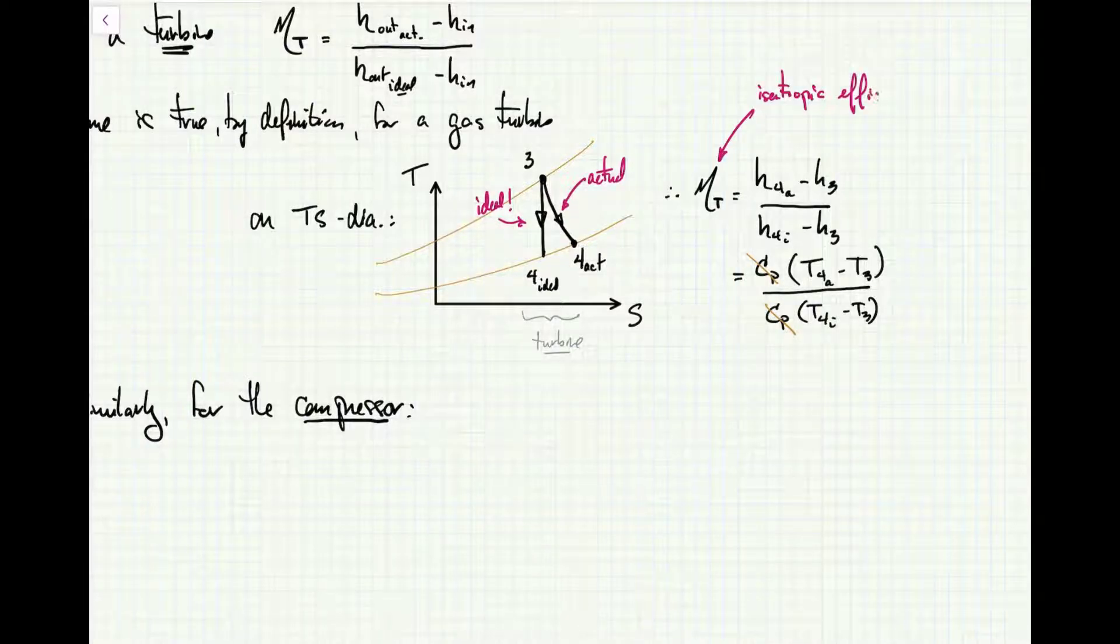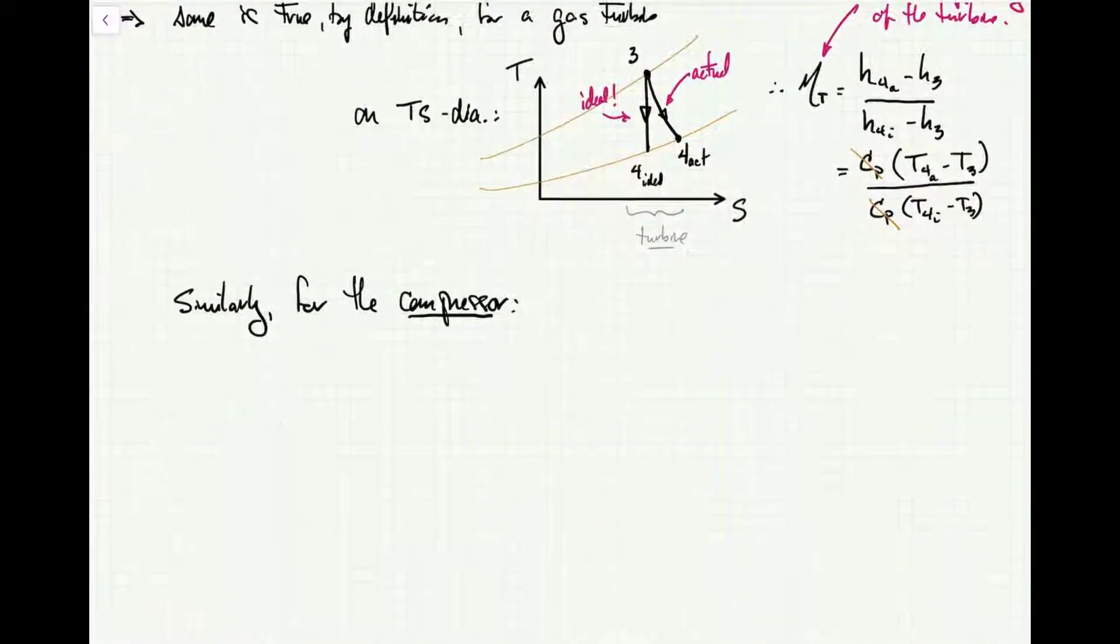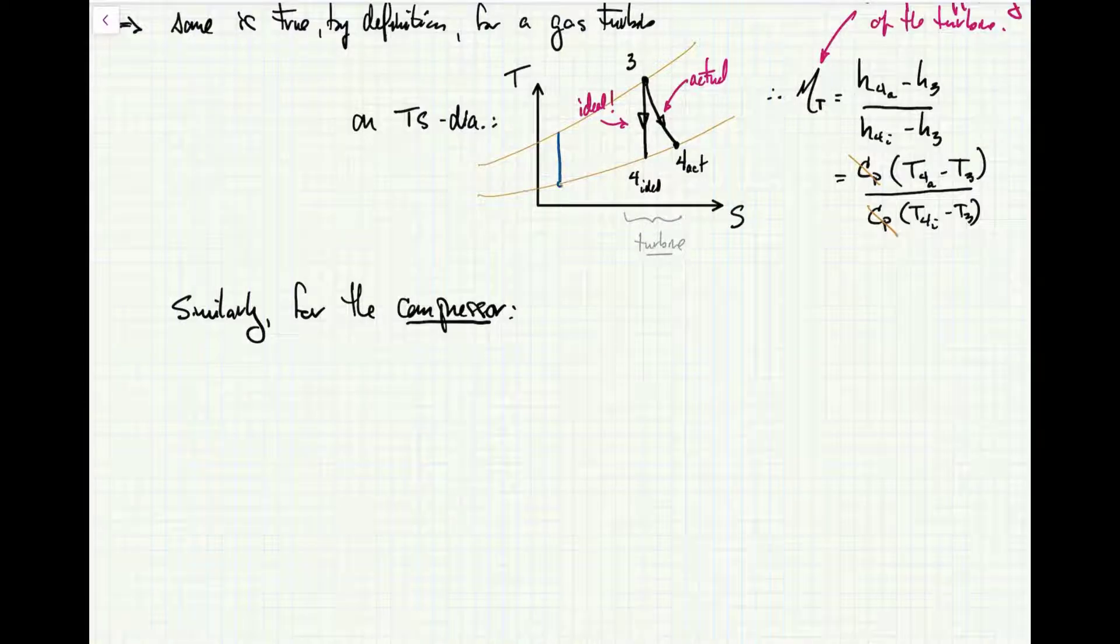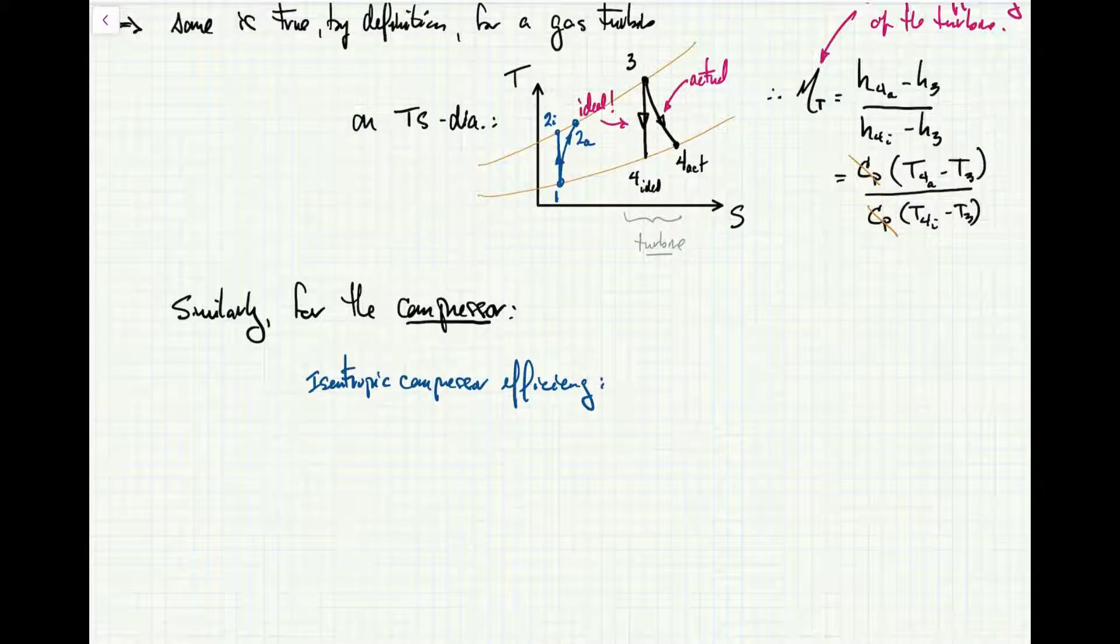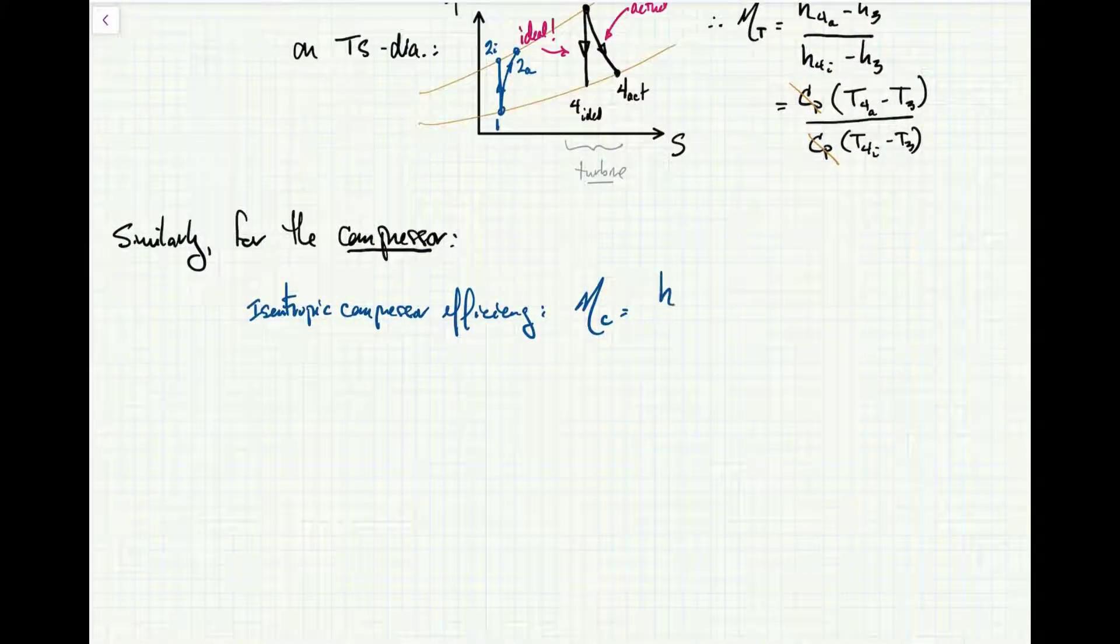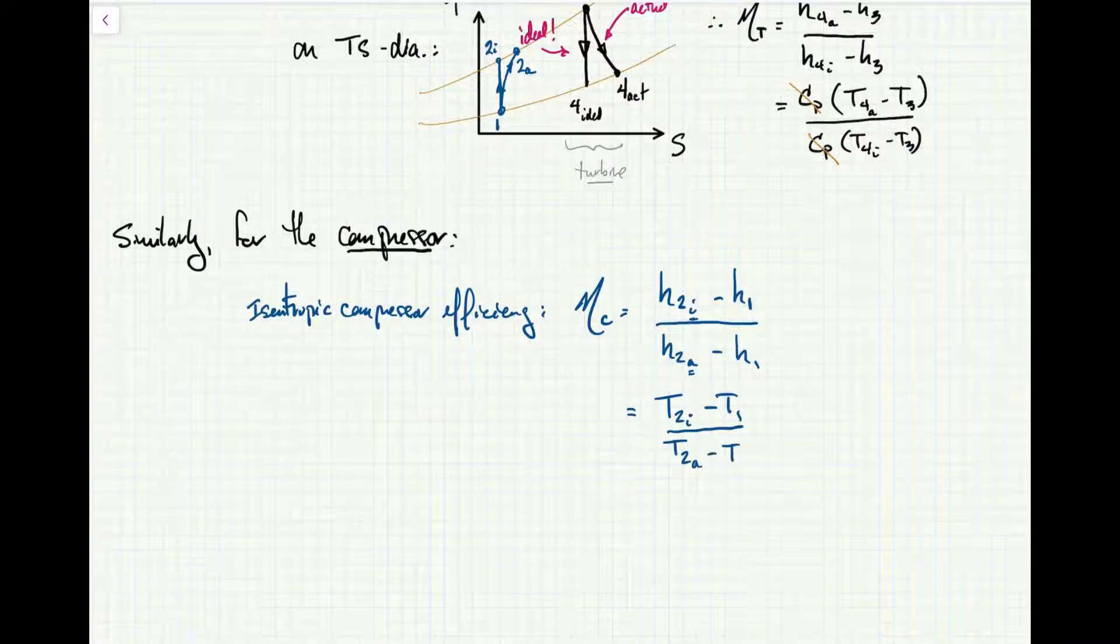That ratio is what defines the isentropic efficiency of the turbine: η_t equals work actual, which is h_4 actual minus h_3, divided by h_4 ideal minus h_3. Making a substitution for my ideal gas, and since I have a perfect gas, the c_p's cancel and I have a nice clean ratio of temperatures. Similarly for the compressor, the isentropic efficiency is the ratio of the ideal work required to compress the air from P_1 to P_2 divided by the actual work required. It's reversed from the turbine because now the actual work required is higher than the ideal, so I put the ideal one on the numerator—that's why h_2_i is on top and h_2_a is on the bottom.